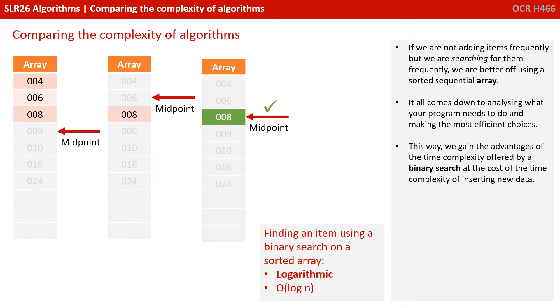If we're not adding items frequently, but we are searching for them very frequently, we're better off using a sorted sequential array. It all comes down to analysing what your program needs to do and making the most efficient choices. This way we can gain the advantages of the time complexity offered by a binary search at the cost of the time complexity of inserting a new piece of data.